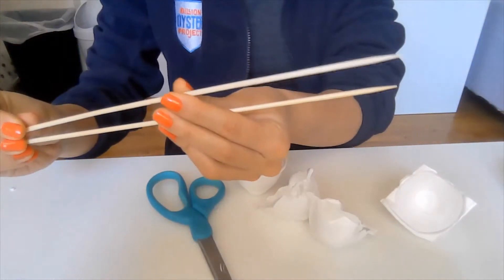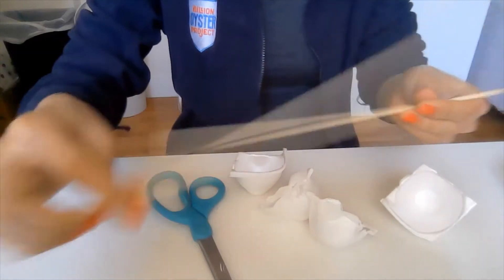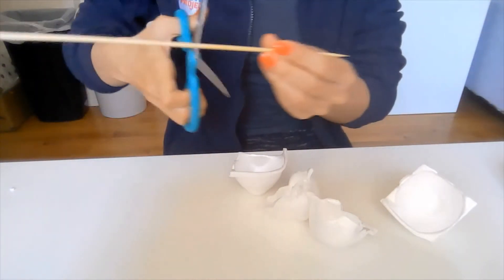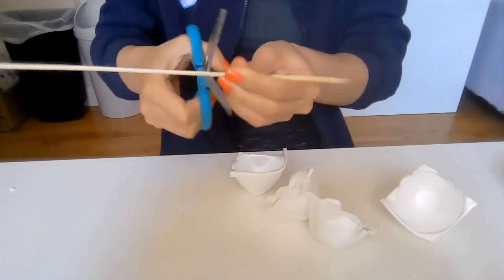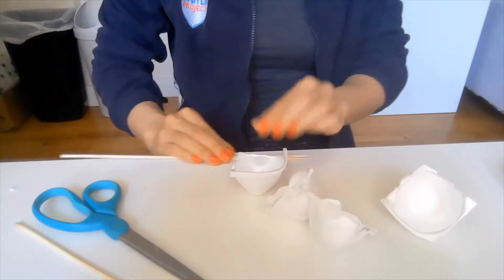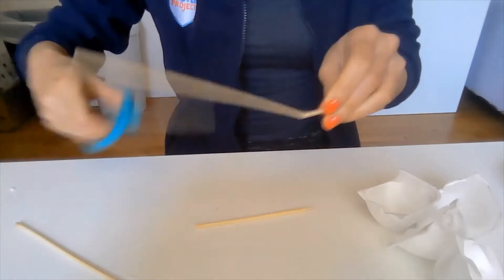Next, you'll take the wooden skewers or the toothpicks if you have them and pierce the cups that you've cut out with them. Since I didn't have any toothpicks, I used some wooden skewers and cut them to the approximate size of toothpicks.